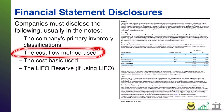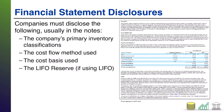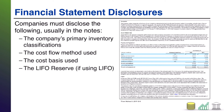You also have to disclose the cost flow method you use. There are so many different options that if companies didn't disclose this, it would be hard to compare information between companies when looking at financial statements. You also have to disclose the cost basis used. Inventory is supposed to be on the books at historical cost; however, there are rules and situations that could cause companies to deviate — the most common being the lower of cost or market (LCM) rule.